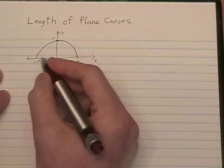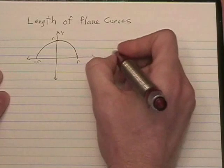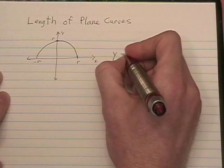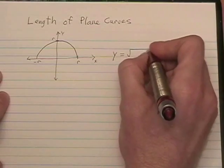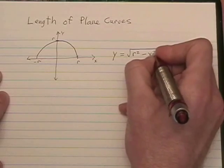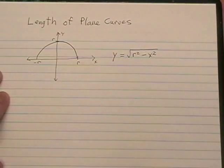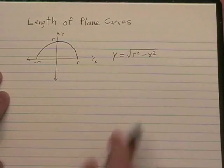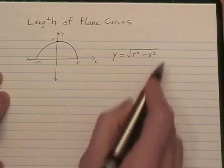Hopefully, you know that the formula for a semicircle of radius r is y equals the square root of r squared minus x squared. It's on the positive side, so there's a positive sign on this square root.